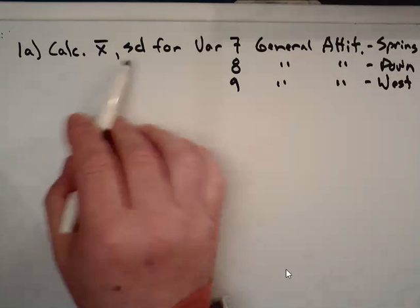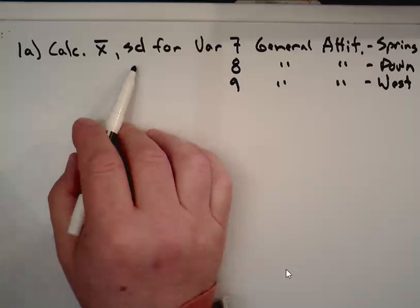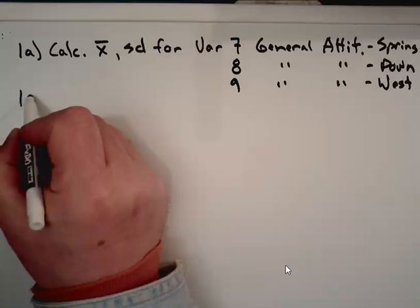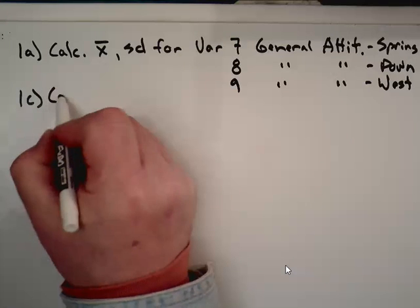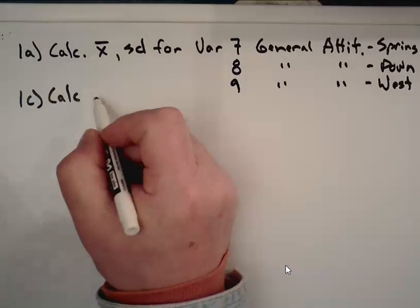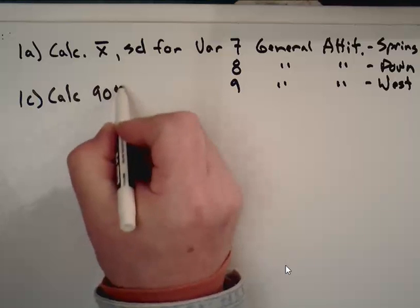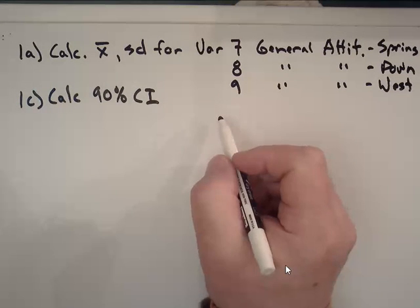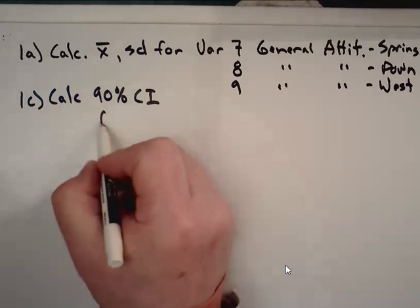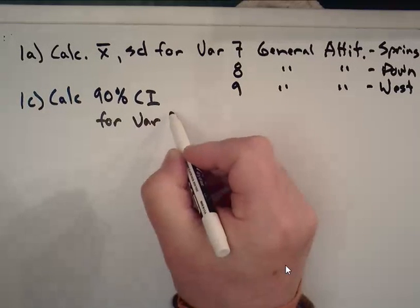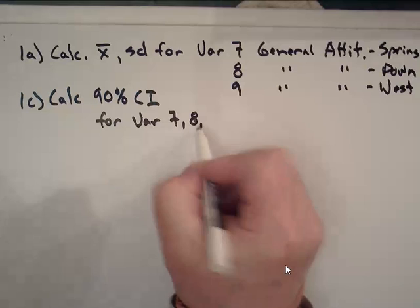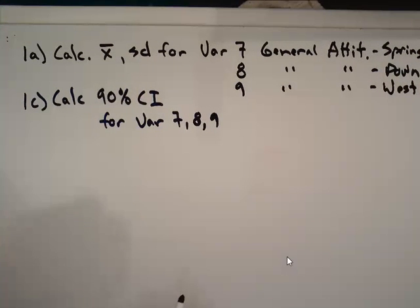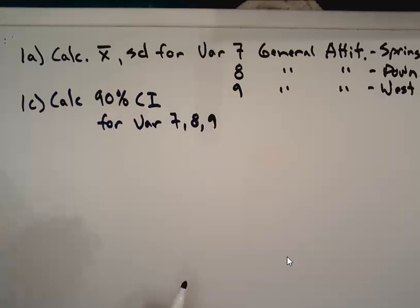Now, this is simple stuff. We've done that before. We've done that last week. And also, I want to jump ahead to 1c, because you'll probably do them in order like this, at least I did. You're also asked to calculate the 90% confidence interval for these, for the same variables, for variable 7, 8, and 9. That was last week's stuff we learned how to do last week, so that shouldn't be a problem. But I'm going to go over how to do it.